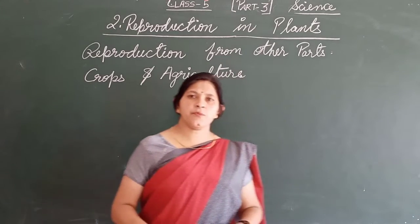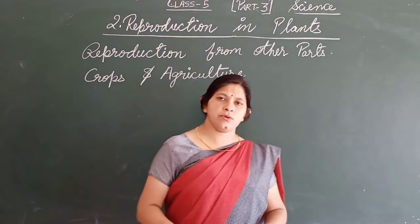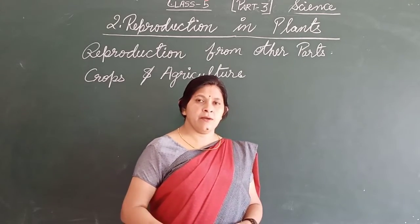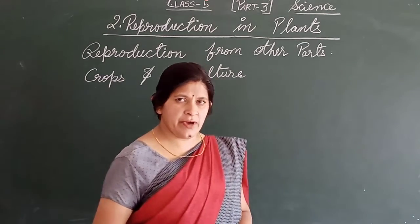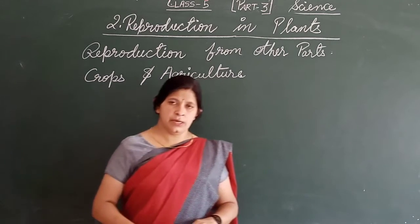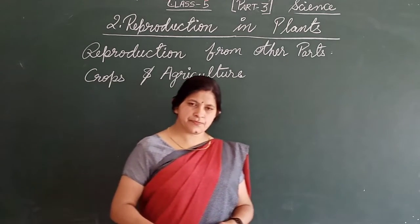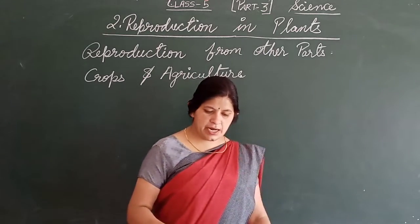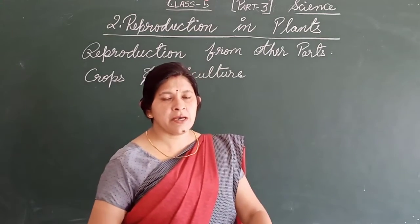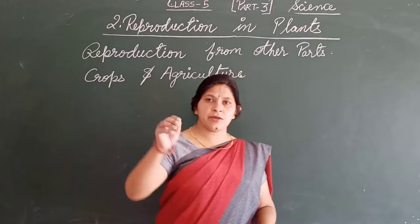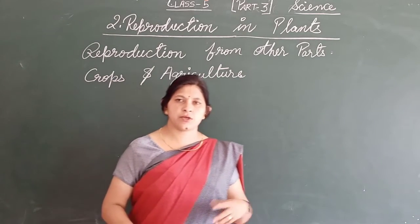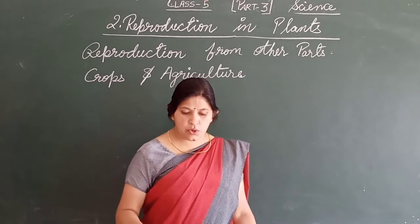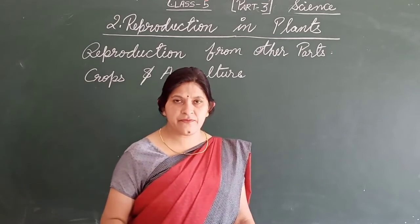You all know that there are two types of plants. One is kharif and the other is rabi. So there are two types of plants — rabi and kharif. Different crops grow in very different types of soil.